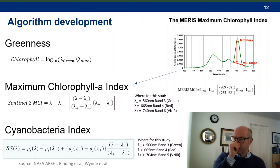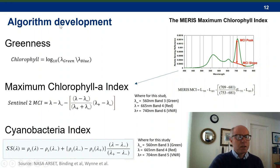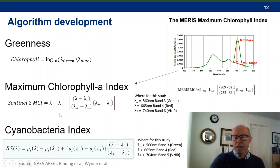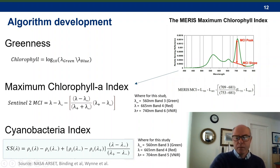Many algorithms exist already for the estimation of water quality parameters from satellite data, and these are just a few. The simplest applies a logarithm to a ratio of the green and blue bands — this effectively measures how green the lake is. It's simple and understandable, but does suffer from interference from sediments and macrophytes. These other algorithms are designed for the higher spectral resolution of ocean sensing satellites with dedicated bands for chlorophyll A. I've tried to adapt them for use in this study with, I think, mixed results.